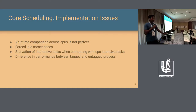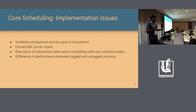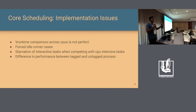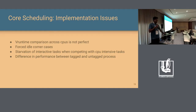The second issue is force idle: you force idle a CPU to let the other sibling run securely, but the force-idled CPU takes a long time to come back online to schedule a new thread. A third strange issue was a difference in performance depending on how tagging was done — tagging process A but not B, tagging B but not A, or giving them two different tags all produced different performance results.